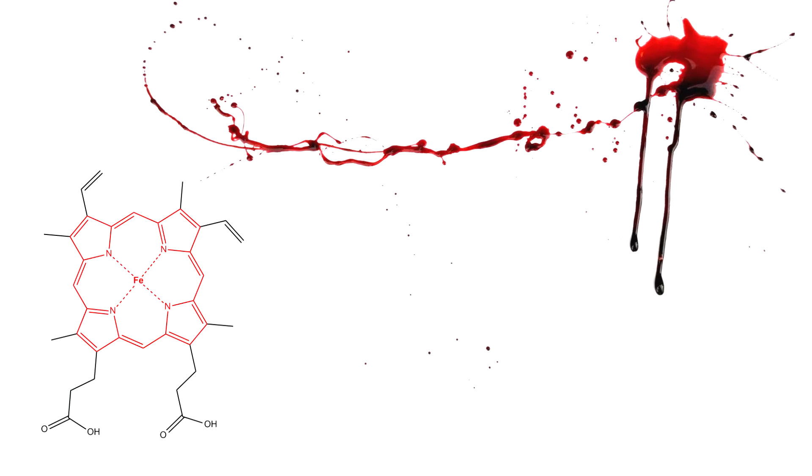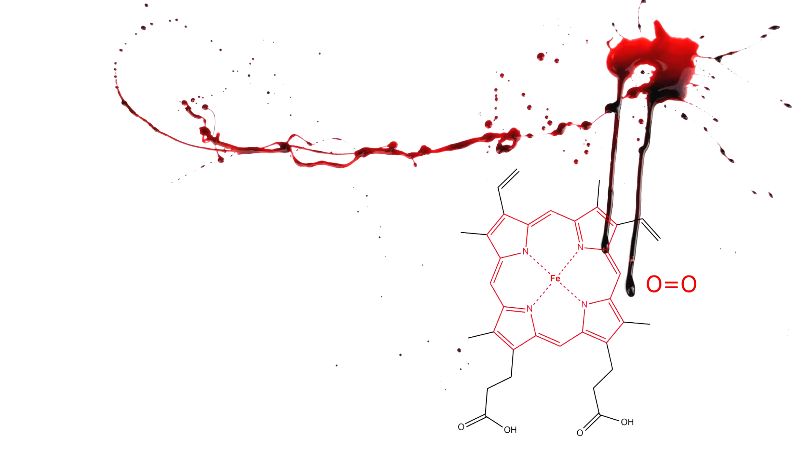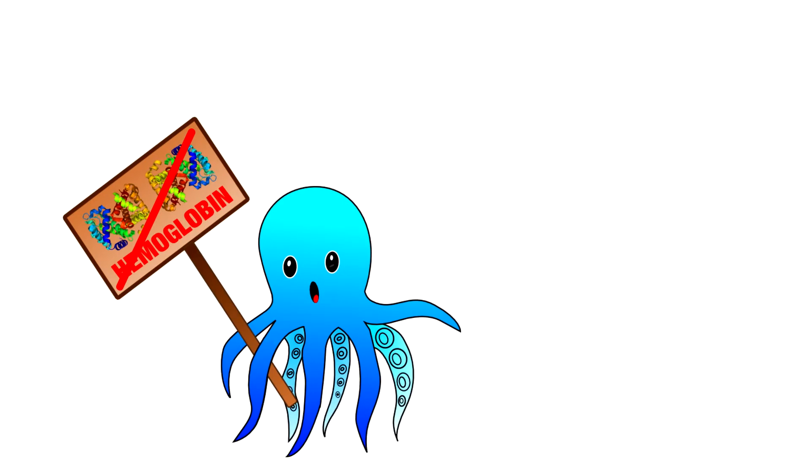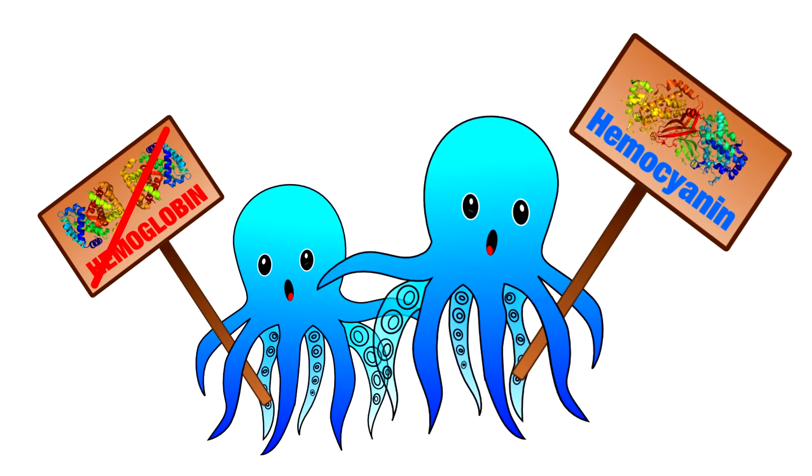Human blood is brightly red colored by this impressive red iron-heme complex, which we use to bind oxygen in our lungs and transport it through our bodies. But octopi don't have this molecule, so they have to rely on an alternative molecule to do the job.